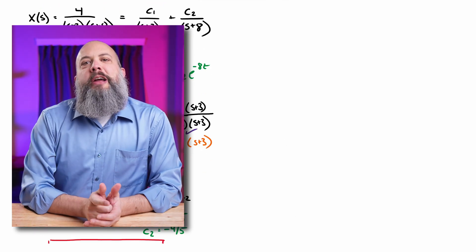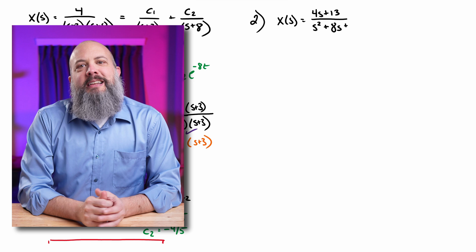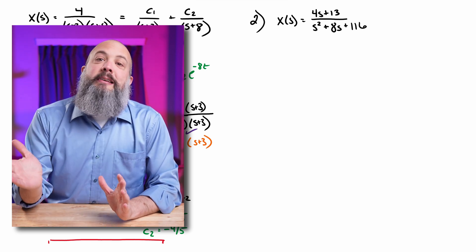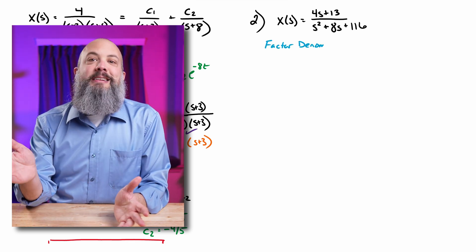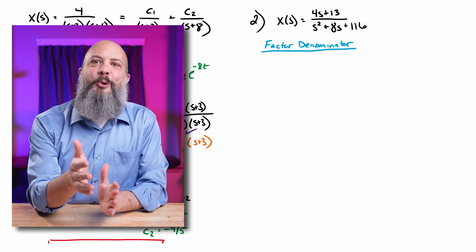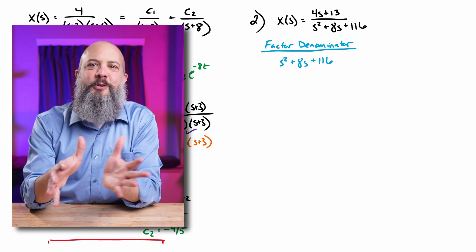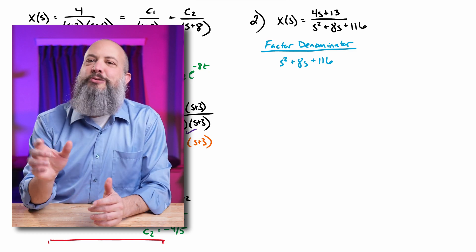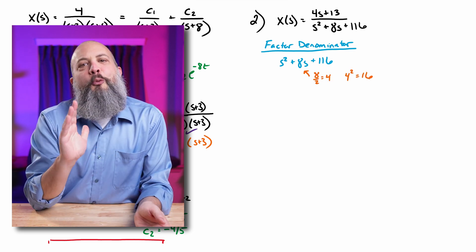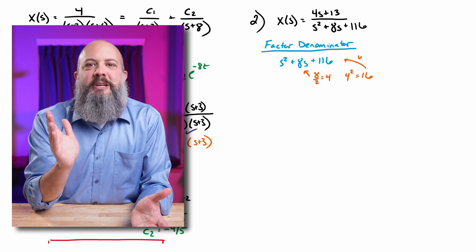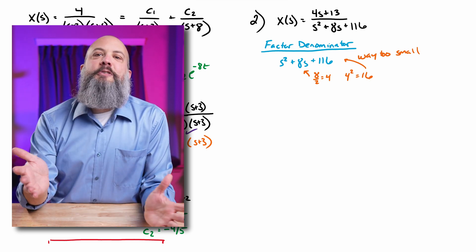Problem two: we've got s² + 8s + 116 in the denominator. That 116 looks really big. If I try to factor it, I want factors that add to 8 and multiply to 116 — like four times four is 16, five times three is 15, six times two is 12. All these possible factors are way less than 116, so we're going to have to factor with a remainder after the factoring.